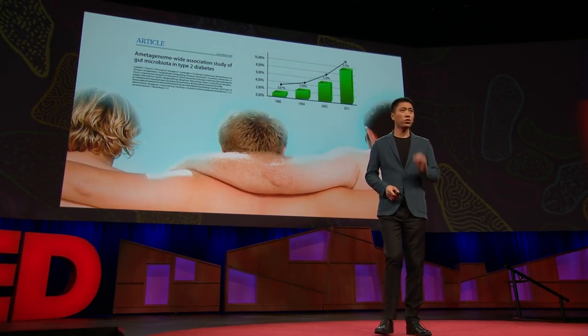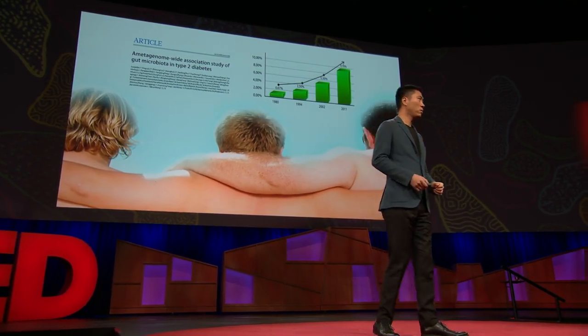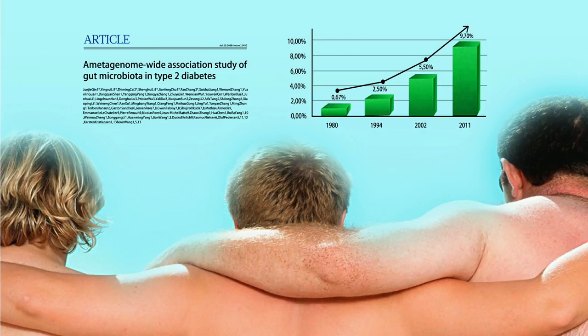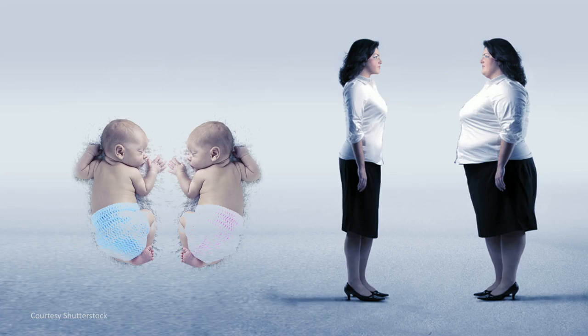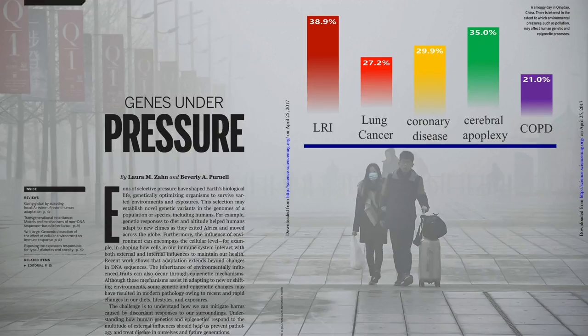Look at that. 30 years ago, when we were still poor in China, only 0.67 percent of the Chinese adult population had type 2 diabetes. Look at it now: 11 percent. Genetics cannot change over 30 years, only one generation. It must be something different — diet, environment, lifestyle. Even identical twins could develop totally differently. One becomes very obese, another does not. One develops cancer, another does not — not to mention living in a very stressed environment.